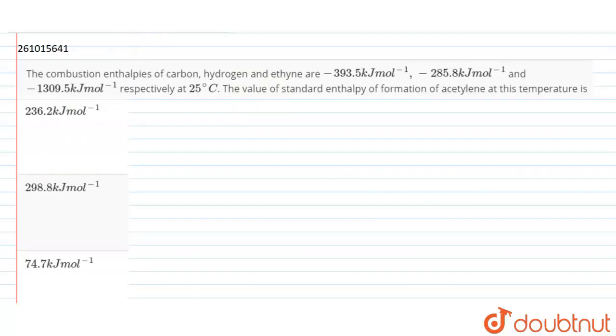Hello friends, so we have a question on thermodynamics. The combustion enthalpies of carbon, hydrogen and ethyne are -393.5 kJ/mol, -285.8 kJ/mol and -1309.5 kJ/mol, respectively at 25°C. The value of standard enthalpy of formation of acetylene at this temperature is.